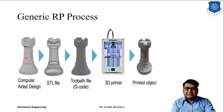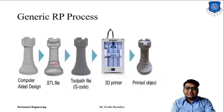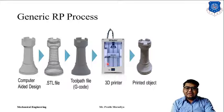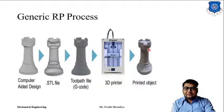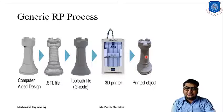To visualize the process: you start with the 3D model, which is converted into an STL file — a layer-by-layer representation of the model. The machine then generates a tool path, which is transferred to the 3D printer. The printer builds the part layer by layer, and after cleanup and post-processing, you have a finished part ready for its application.